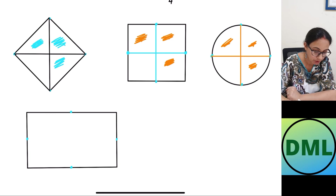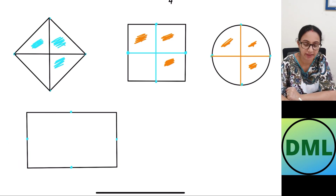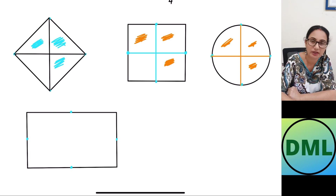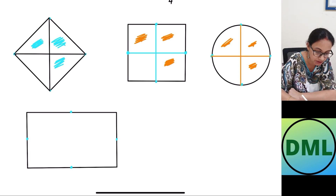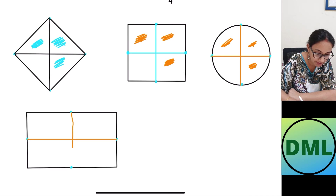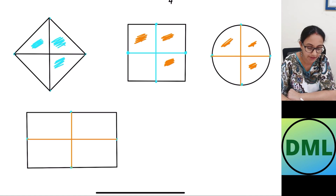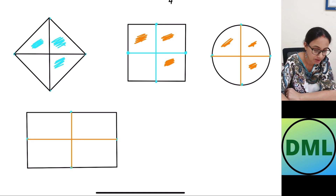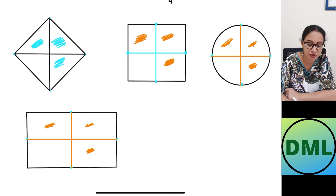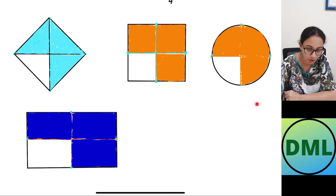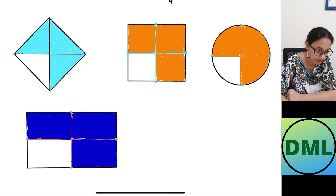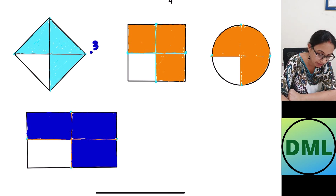Let's look at the next shape — this is the rectangle. I divide it into four equal parts in the middle. How many parts do I shade? Three parts — this part, this part, and this part. I will show you once I color all the parts.